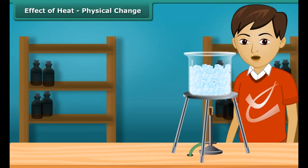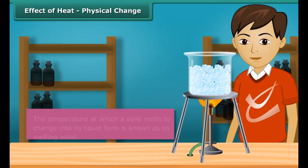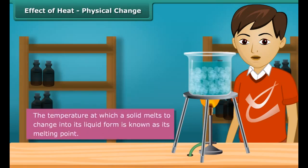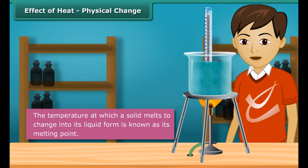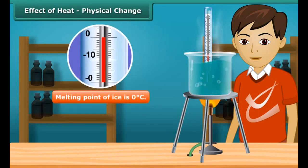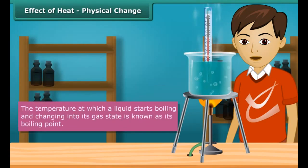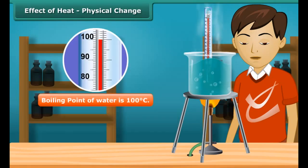Let us now look at how heat affects change in state. On heating, a solid changes to liquid and a liquid changes to gas. Conversely, on cooling, gas loses heat to change into a liquid, and a liquid loses heat to change into a solid. The temperature at which a solid melts to change into its liquid form is known as its melting point. The melting point of ice is 0 degrees Celsius. The temperature at which a liquid starts boiling and changing into its gas state is known as its boiling point. The boiling point of water is 100 degrees Celsius.